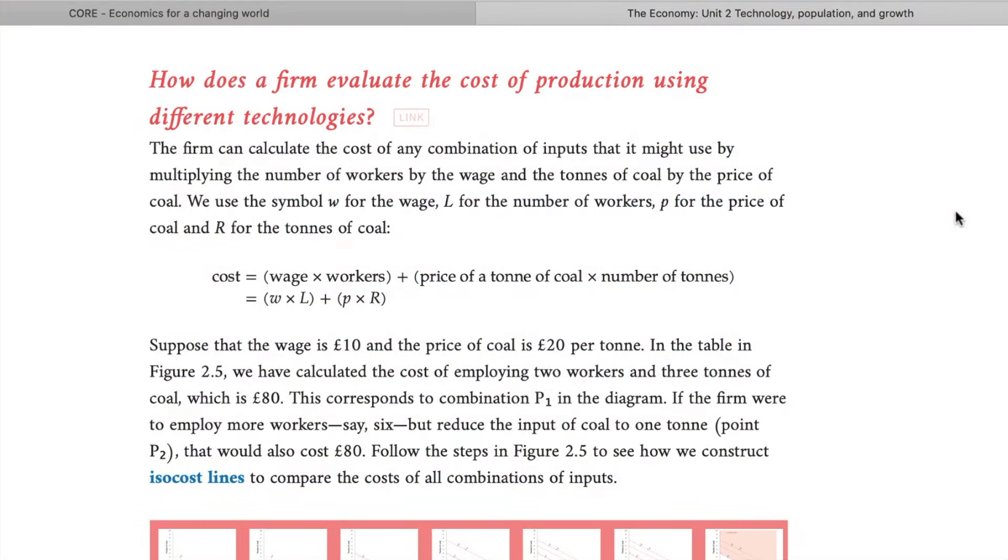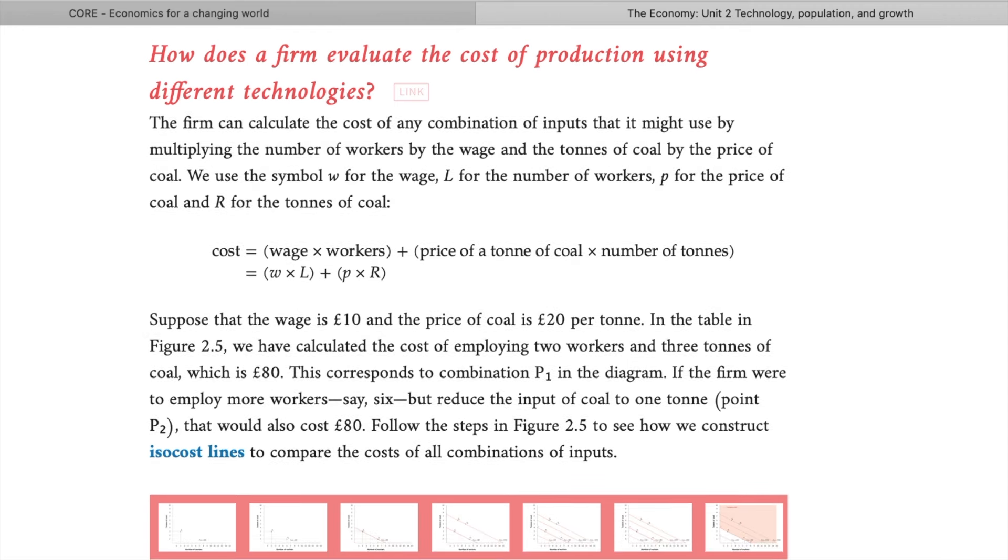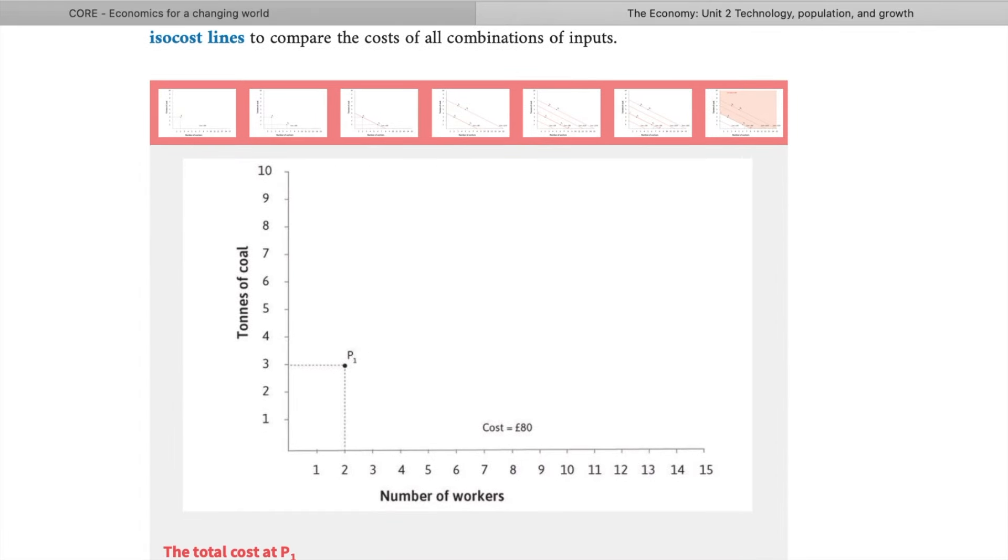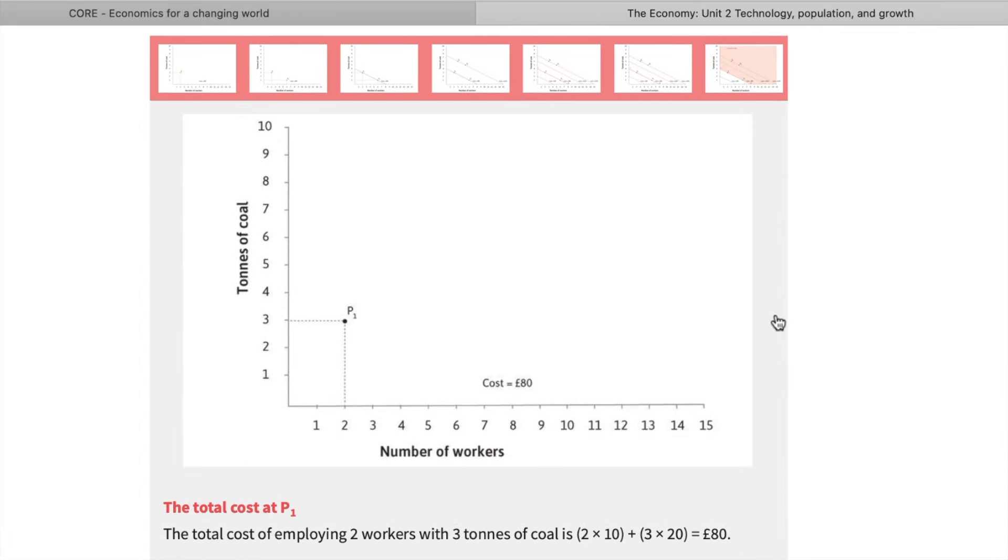How do firms choose a technology? Of course, they first look at the available technologies and choose the one that costs the least and produces the same quality products. As before, let's assume we're a textile firm and want to produce 100 meters of cloth, and we want to work out the cost of technology P1 for our firm.